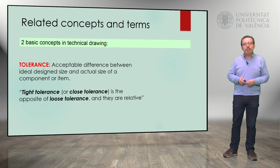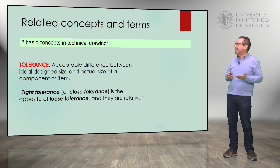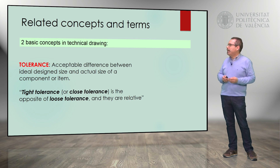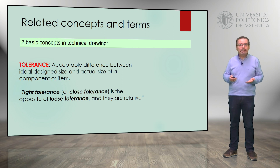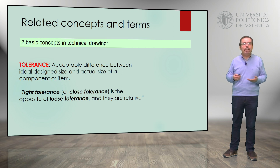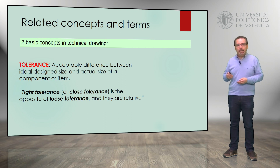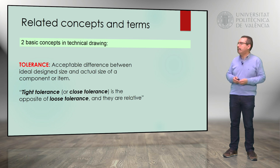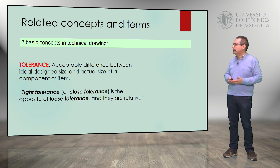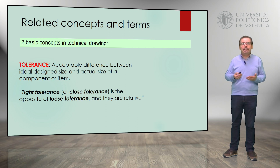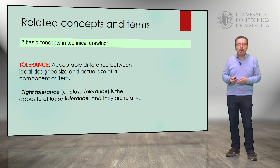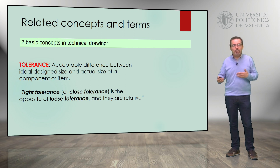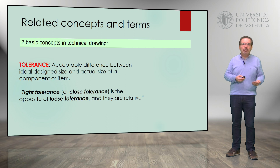The other important concept related to drawing is tolerance. Tolerance is the acceptable difference between the ideal design size, as conceived by the designer, and the actual size of an element, component, or item. We have tight tolerance or closed tolerance — they are synonyms — which is the opposite of loose tolerance. They are very relative concepts, depending on the engineering element or component we are designing.